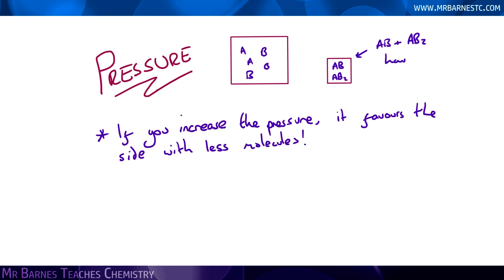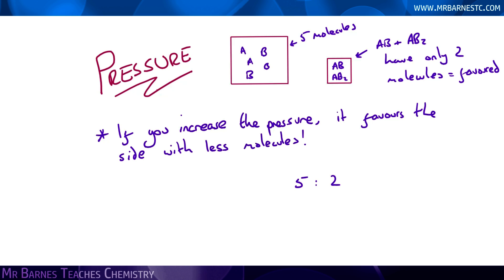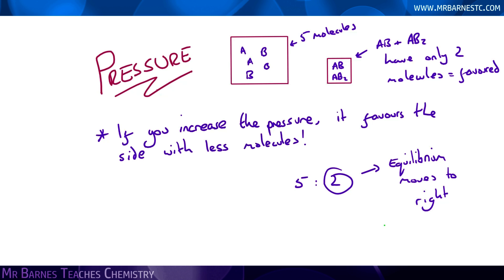So if I react A and B together to make AB and AB2, you can see that I've got two products — AB and AB2 — and I've got five reactants: A, A, B, B, and B. Therefore I've got a ratio of 5 to 2. Increasing the pressure favours the side with the least molecules, so equilibrium in this case will move to the right towards my products, and therefore I'll get a higher yield of my product.